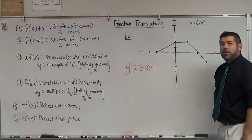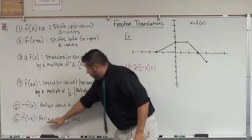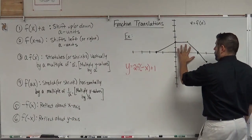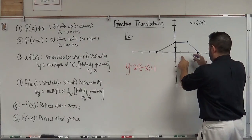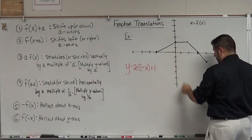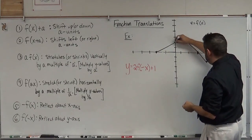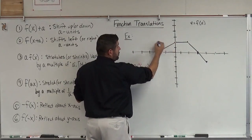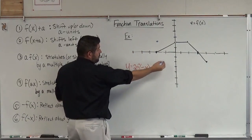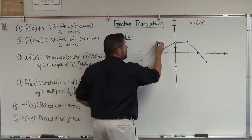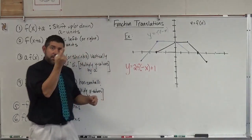Number 2: y equals 2 times f of negative x plus 1. So what we're going to do here is we're going to start with f of negative x. F of negative x reflects about the y-axis. So we're going to take all this and spin it around the y-axis. So over here, this was at negative 2 — now it's going to be at positive 2. This one here is at x equals 2, now it's going to be at x equals negative 2. This was at positive 3, so now it's at negative 3. This was at positive 4, so now it's going to be at negative 4. And that's what that looks like — the graph of f of negative x. I've just spun it around the y-axis.